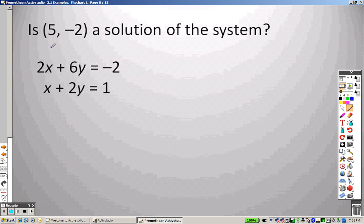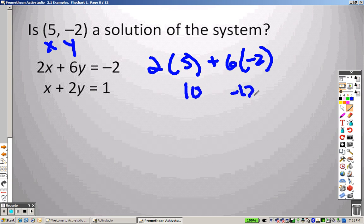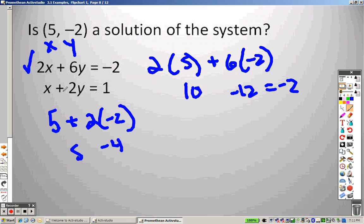Does this work? Here's how you can tell: you plug it in. This is x, this is y. So 2 times 2 plus 6 times negative 1. I get 4 and negative 6, which equals negative 2. It works! But it has to work for both. If it doesn't work for both, it's not the right answer. So I plug it in here: 2, negative 1. That's 2 and negative 2, which is 1. Since it works for both, is it a solution? Yes, it is a solution.